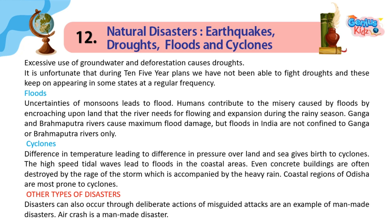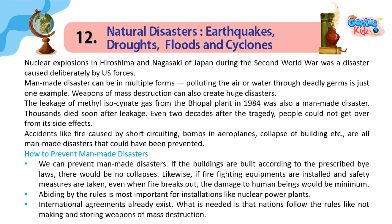Other types of disasters: Disasters can also occur through deliberate actions of misguided people — attacks are an example of manmade disasters. Air crashes are manmade disasters. Nuclear explosions in Hiroshima and Nagasaki of Japan during the Second World War were disasters caused deliberately by US forces. Manmade disasters can be in multiple forms; polluting the air or water through deadly germs is just one example. Weapons of mass destruction can also create huge disasters. The leakage of methyl isocyanate gas from the Bhopal plant in 1984 was also a manmade disaster — thousands died soon after the leakage, and even two decades after the tragedy, people could not get over its side effects. Accidents like fire caused by short-circuiting, bombs in aeroplanes, and collapse of buildings are all manmade disasters that could have been prevented.